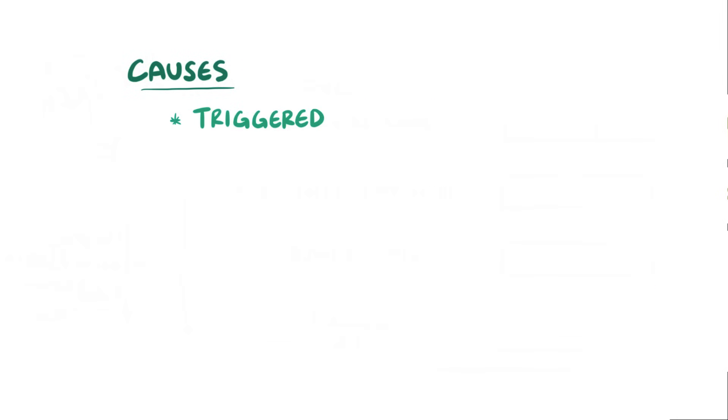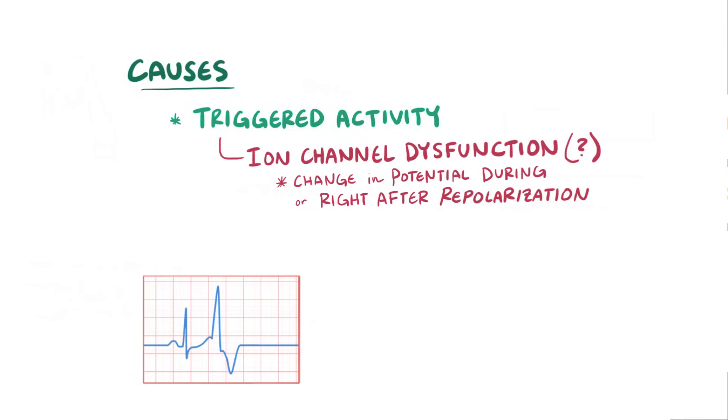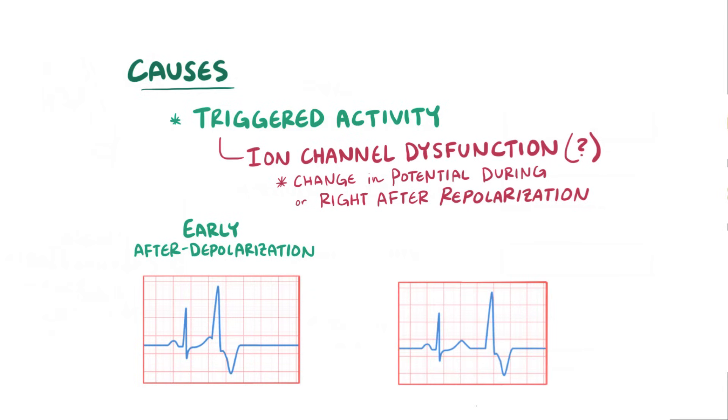Ectopic beats can also have triggered activity, which is where cells depolarize early. The exact mechanism here though is unclear, but it might be due to an ion channel dysfunction that leads to an unexpected change in the membrane potential during or right after repolarization. When a cell depolarization happens during ventricular repolarization, it's called an early after depolarization, and if it happens after repolarization is finished, it's called a delayed after depolarization.